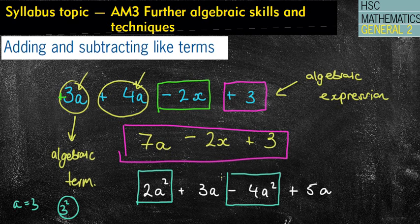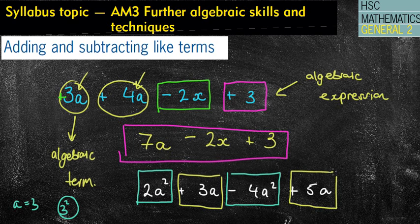I've then got the 3a and another 5a there. So once again, you can see that I'm including the sign in front of it. So if I want to simplify this, we've got 2a squared subtract 4a squared, which is minus 2a squared. I've got 3a's plus 5a's, so we've got 8a's and it's positive. Therefore, I've got negative 2a squared plus 8a.